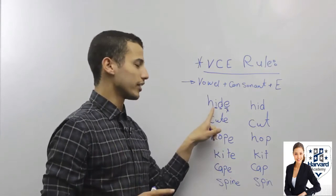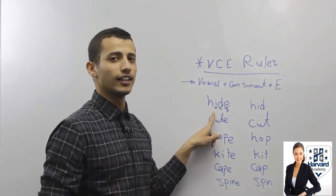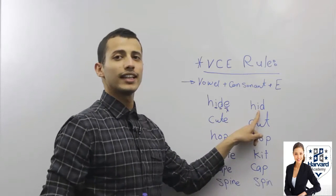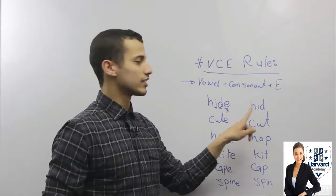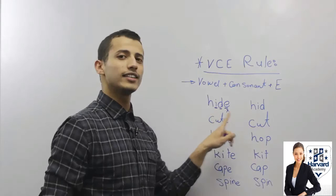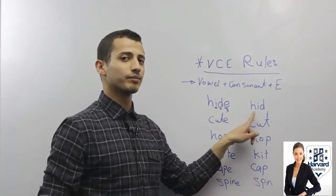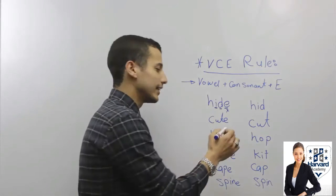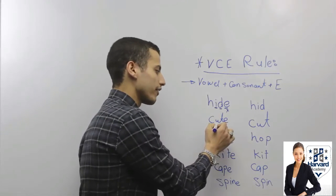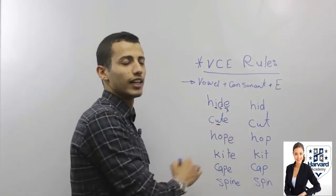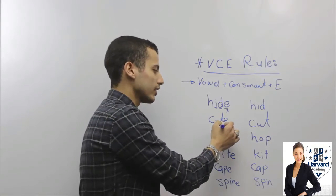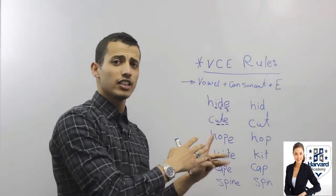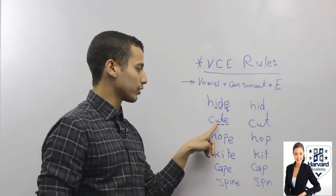So I'm going to say 'hide,' and the E is going to be silent. So this is 'hide.' Remove the E and this will be 'hid.' Hide, hid. Now a different example — this word here ends with a vowel then a consonant then E. Can you see this pattern?